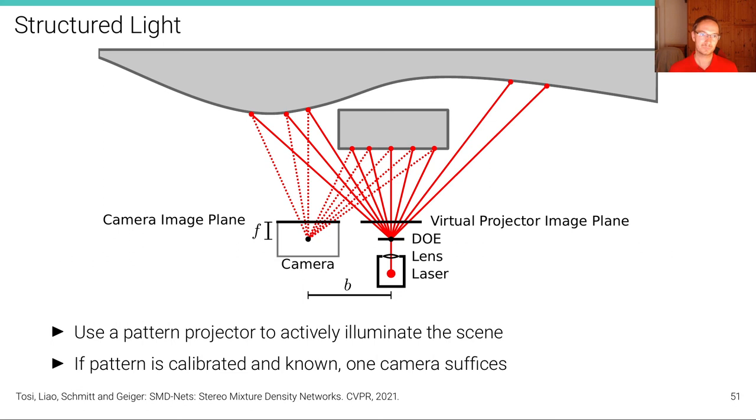Another more broadly used and popular technique is so-called structured light and there's many different variants of structured light estimation algorithms. Structured light estimation algorithms in their very simple form use a pattern projector that illuminates a scene using a stripe or a dot pattern. And if that pattern is calibrated, if it is known and the projector is known, which acts as a virtual image plane.